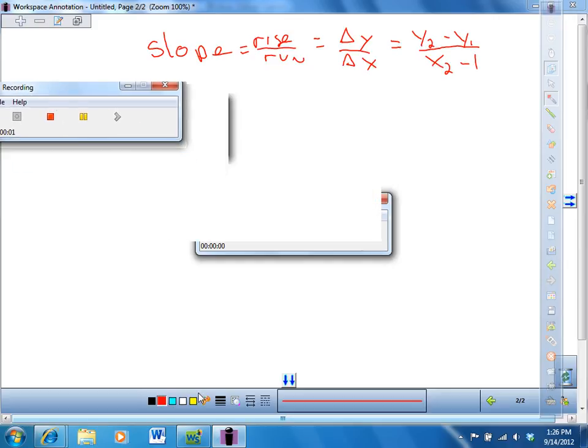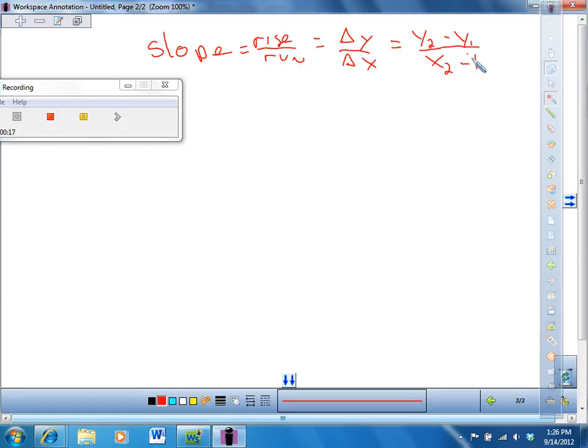Class, slope is rise over run. Delta y over delta x, which means change in y over change in x, equals y2 minus y1 over x2 minus x1.